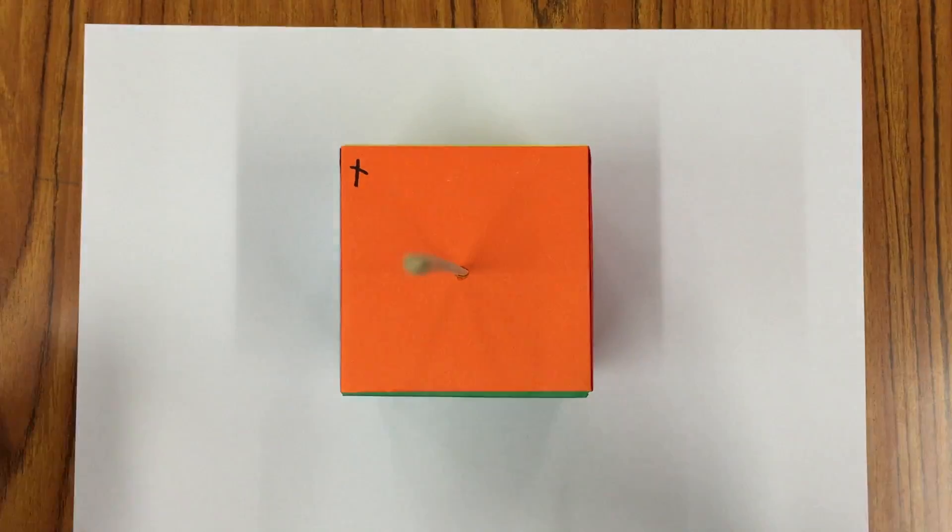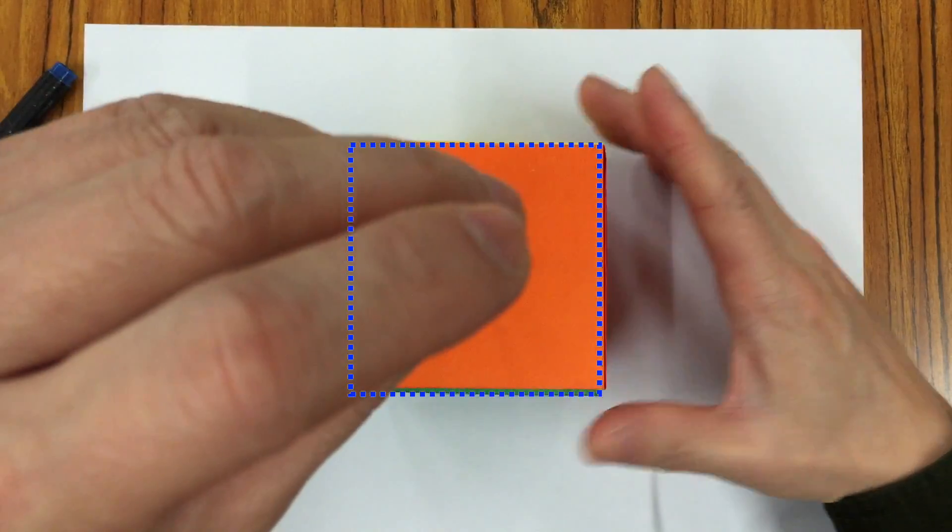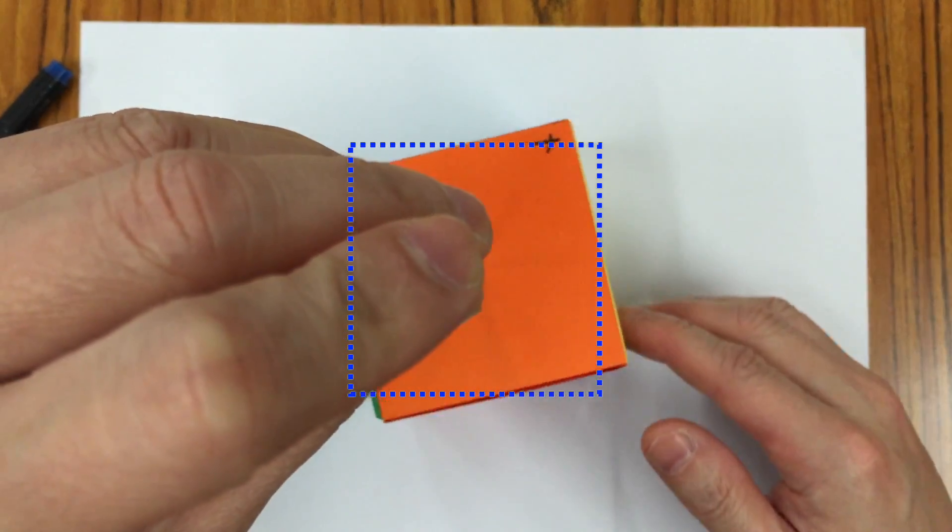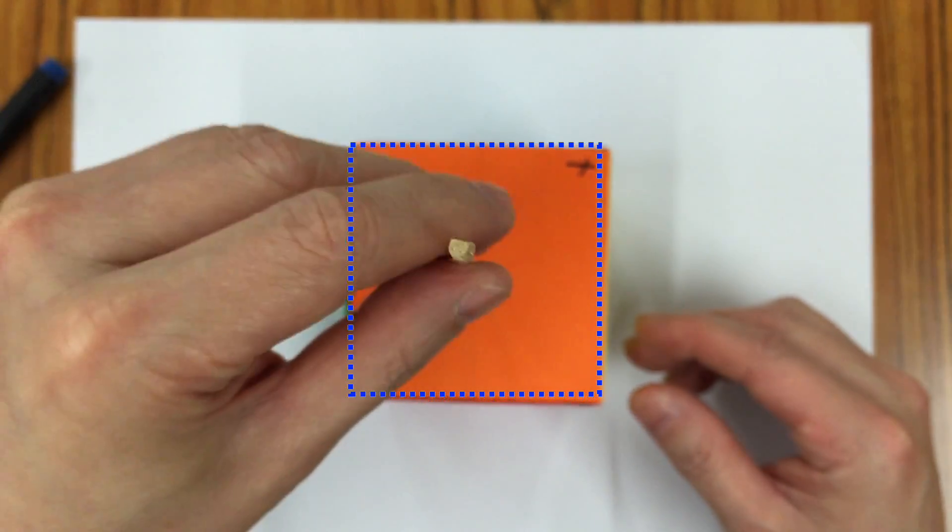For example, let's put a mark here. This is the original position of the cube. If I rotate it by 90 degrees, it will overlap with itself for the first time.